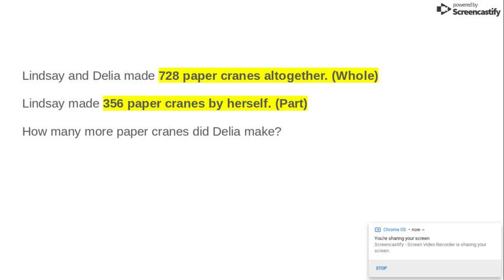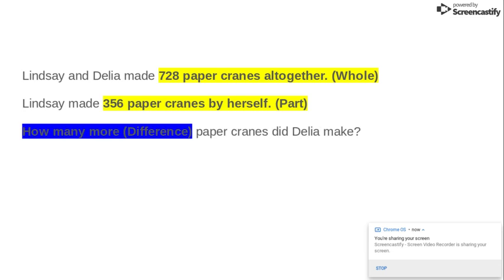Here's the known information. 728 is the whole, and that's how many paper cranes altogether. 356 is how many Lindsay made, and that's one part. How many more is the unknown information, and that's what we're trying to figure out.